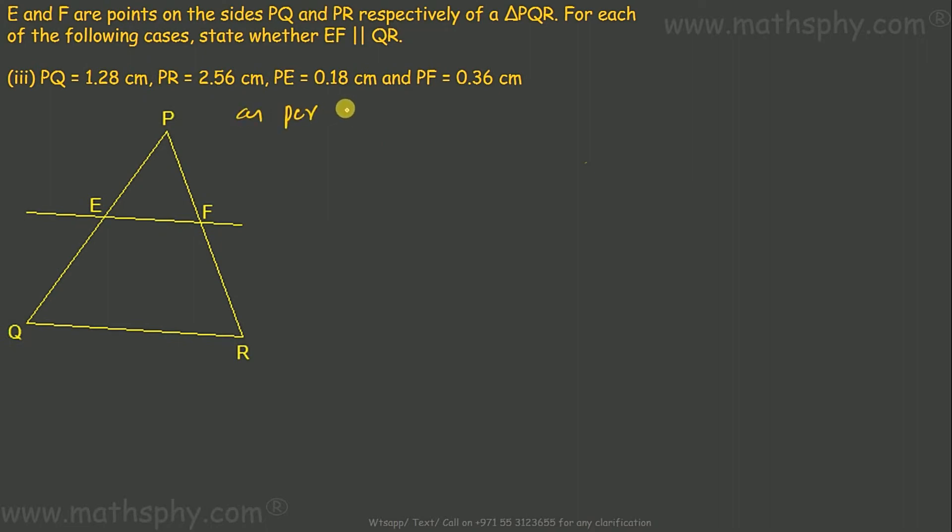As per triangle similarity theorem, if PE over EQ is equal to PF over FR then PE over PQ will also be equal to PF over PR.